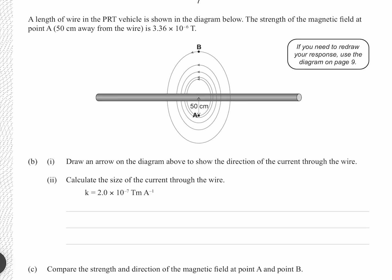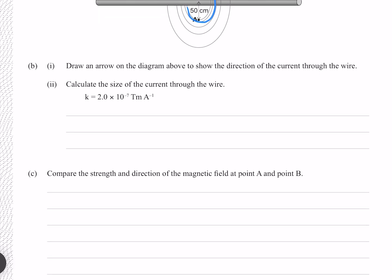A length of wire in the PRT vehicle is shown in the diagram below. The strength of the magnetic field at point A, 50 centimeters away from the wire, is 3.36 × 10⁻⁶ tesla. Draw an arrow on the diagram to show the direction of the current through the wire. Using our right-hand rule, if our fingers are curling in this direction, our thumb points this way, meaning the current must be towards the left.